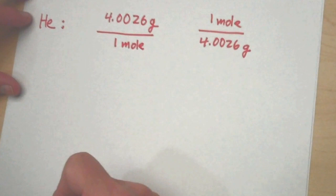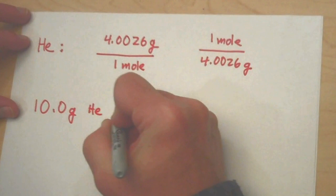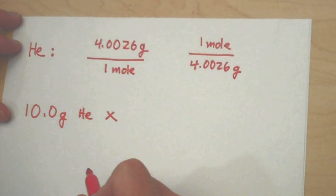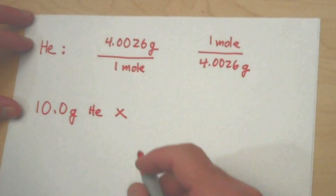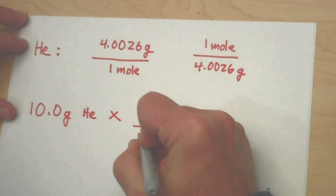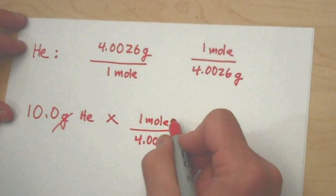Now let's do our problem. So if we have 10 grams of helium, then we want to multiply it by a conversion. But we're trying to get moles and so we want the grams to disappear. So if grams is at the top here, we want grams to be at the bottom in our conversion factor. So we'd use this factor here: one mole over 4.0026 grams. So the grams will cancel out and we'll be left with moles.